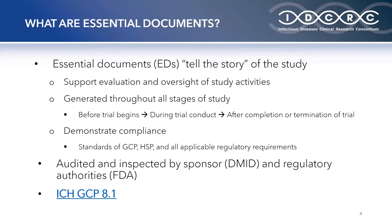Essential documents individually and collectively tell the story of the study. They support the evaluation and oversight of study activities and are collected throughout the stages of the study — from before the trial begins (pre-implementation), during trial conduct (implementation), and after completion or termination (study closeout). Essential documents demonstrate compliance of the investigator, sponsor, and monitor with the standards of GCP and all applicable regulatory requirements. They are also audited and inspected by the sponsor, which is DMID, and regulatory authorities such as the FDA.